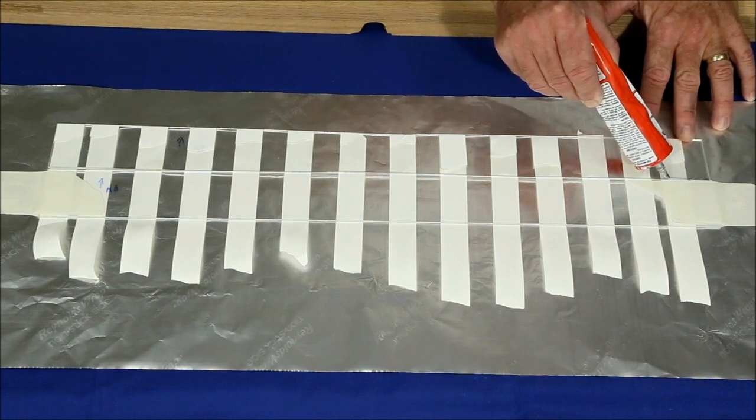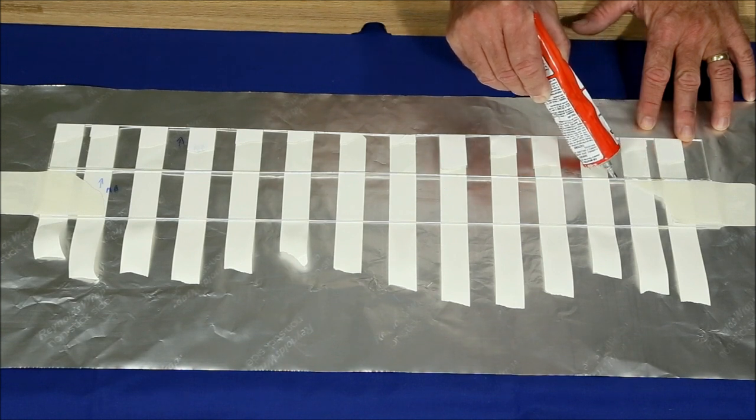Then apply a thin, continuous, even bead of the solvent cement to the joint.